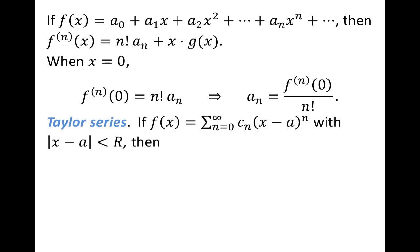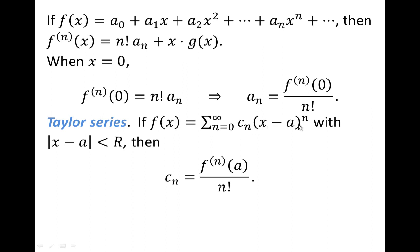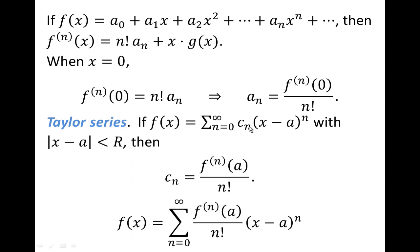So this is what the Taylor series is going to be. Now I'll state it for a general center a. This is our power series representation for f of x. It turns out our coefficient c sub n is the nth derivative of f evaluated at a, divided by n factorial. If we let x equal a in the power series, we get x minus a to the nth, which eliminates all other terms just like setting x equal to zero did before.